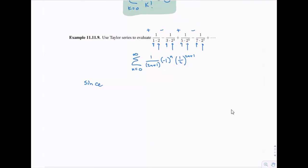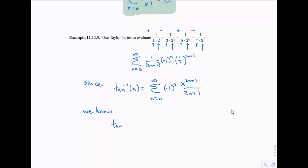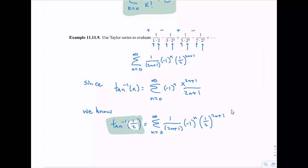Since arctan(x) equals the sum from n = 0 to infinity of (-1)^n times x^(2n+1) over (2n+1), substituting x = 1/2 gives us our series. So arctan(1/2) equals the sum from n = 0 to infinity of our expression. It may not be a super elegant answer, but the series converges to arctan(1/2).